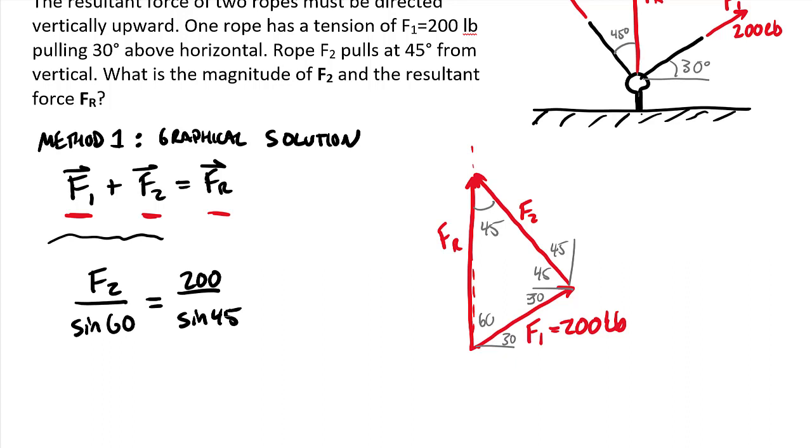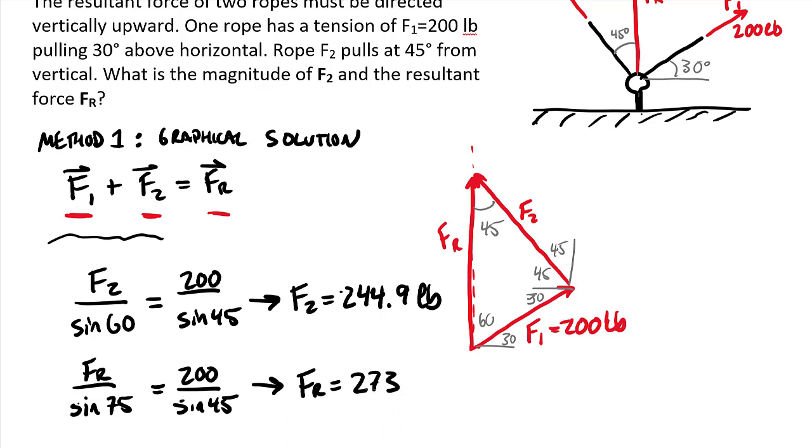We can do the same to solve for Fr: Fr divided by the angle opposite it, sine of 75, equals 200 over sine of 45. From the equation, we find that F2 equals 244.9 pounds, and the resultant force Fr equals 273 pounds.